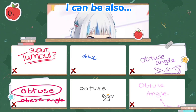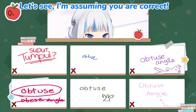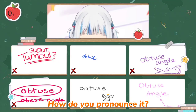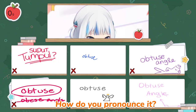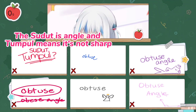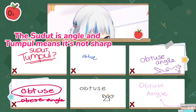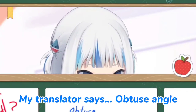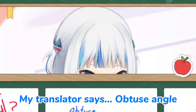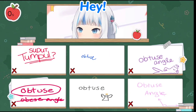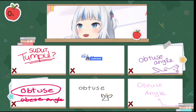Let's see — I'm assuming you are correct. How do you pronounce it? The subject is 'angle' and it means not sharp. My translator says 'obtuse angle' — you are correct, Ollie! Excellent. The teacher used Google — but everybody got that right, yeah!